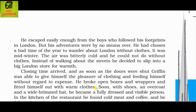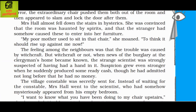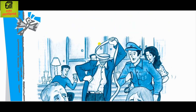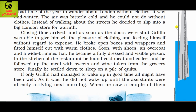Soon he had shoes, an overcoat, and a wide-brimmed hat, and became a fully dressed and visible person. In the kitchen of the restaurant he found cold meat and coffee, and followed up the meal with sweets and wine from the grocery store. Finally he settled down to sleep on a pile of quilts. If only Griffin had managed to wake up in time, all might have been well, but he did not wake up until the assistants were already arriving the next morning.